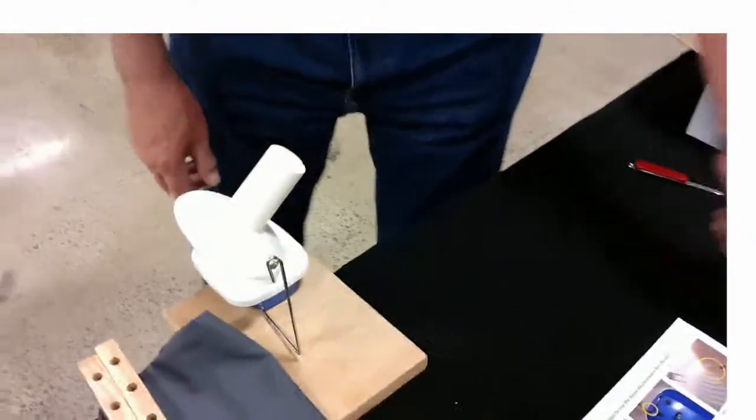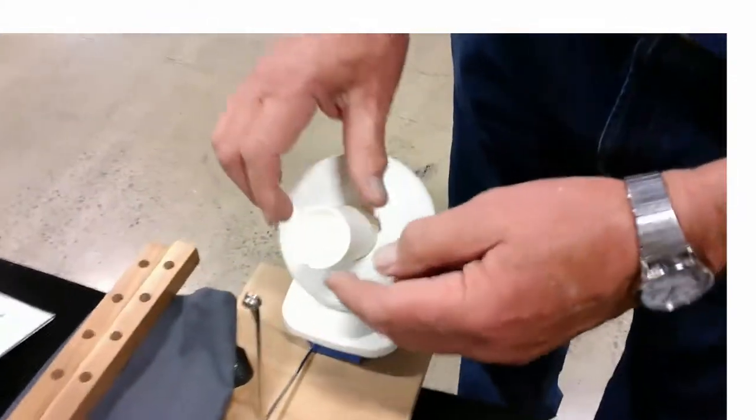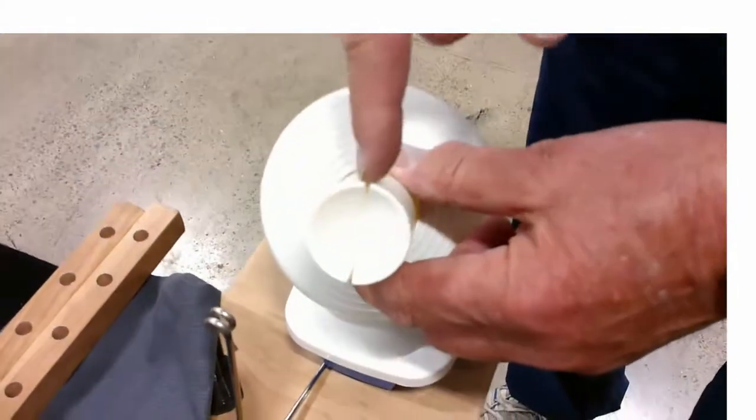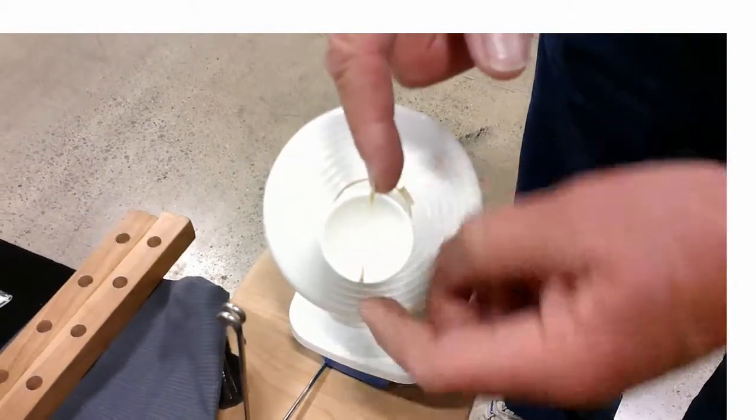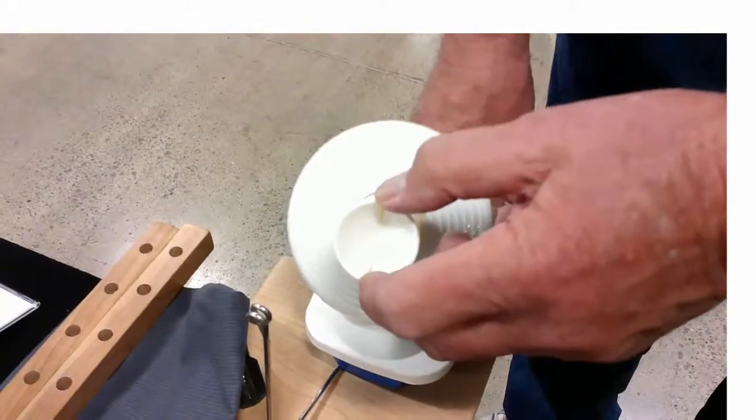And then you take your yarn, run it to your eyelet. Take the end of your yarn and insert it in the crosses here. And that will hold it in place.